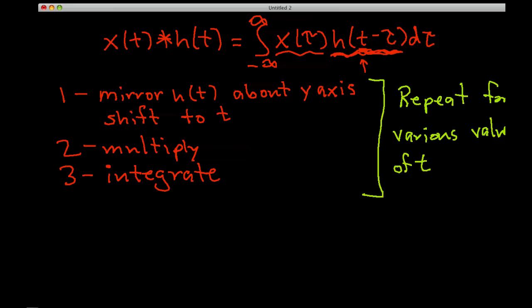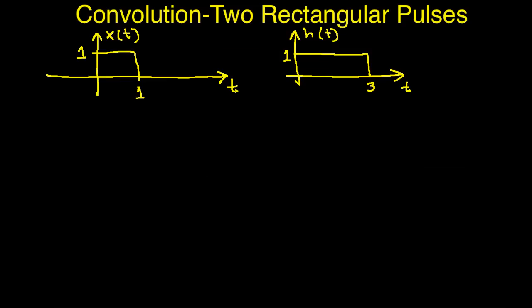These steps are then repeated for various values of t. In principle you could do this for every possible value of t, but this would take quite a while. In practice, you look for the values of t that are going to change the basic structure of your integral. To show how this works, let's choose a particular value of t and go back to our two signals and begin by graphing x of tau. We'll do this because we want to lay on top of it a flipped and shifted version of h, where tau is the variable of integration.